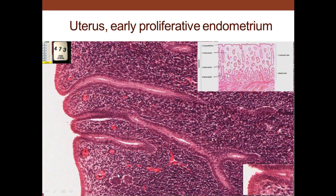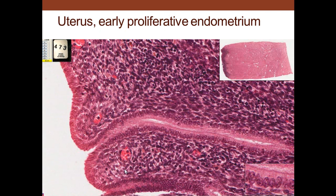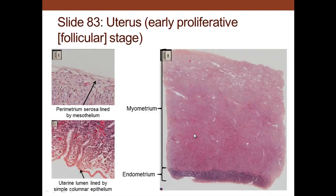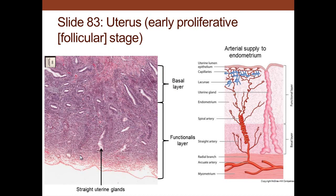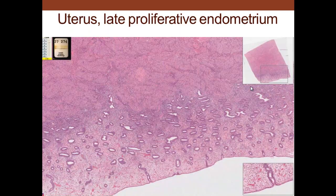In the early proliferative phase, the epithelium recovers — there are even some ciliated cells — and it covers the endometrium. Then things start to grow and the functional layer begins to expand. We see simple columnar cells and ciliated cells on the surface. The epithelium has completely healed the surface again, and you can see spiraling arteries feeding this area and sending nutrients up.